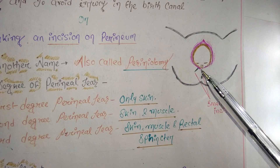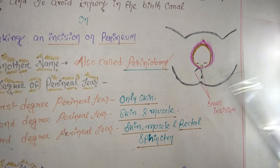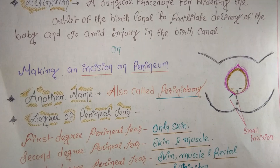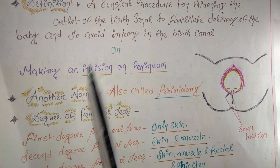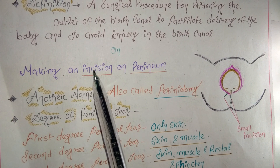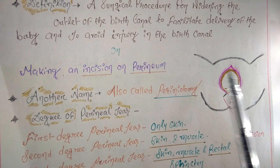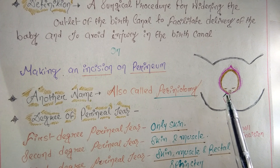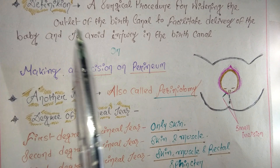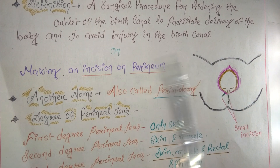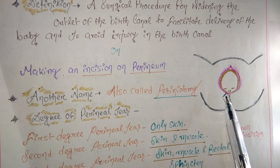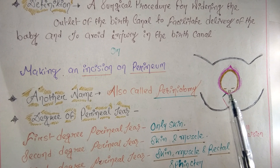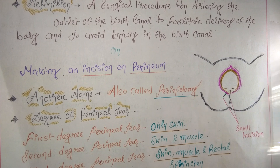That small cut or incision in the perineum area is called episiotomy. Making an incision — a small cut — in the perineum area is the definition of episiotomy. It is also called perineotomy because we are making a cut in the perineum.